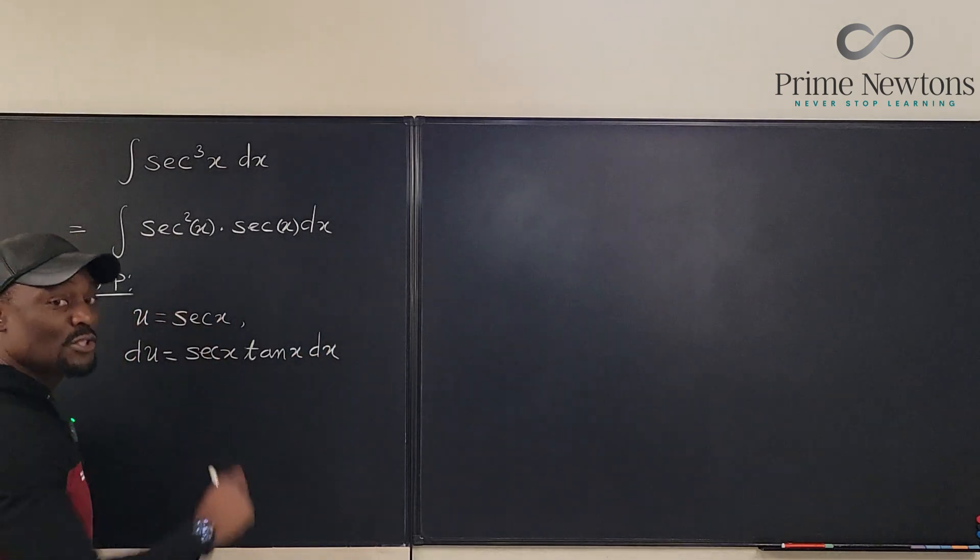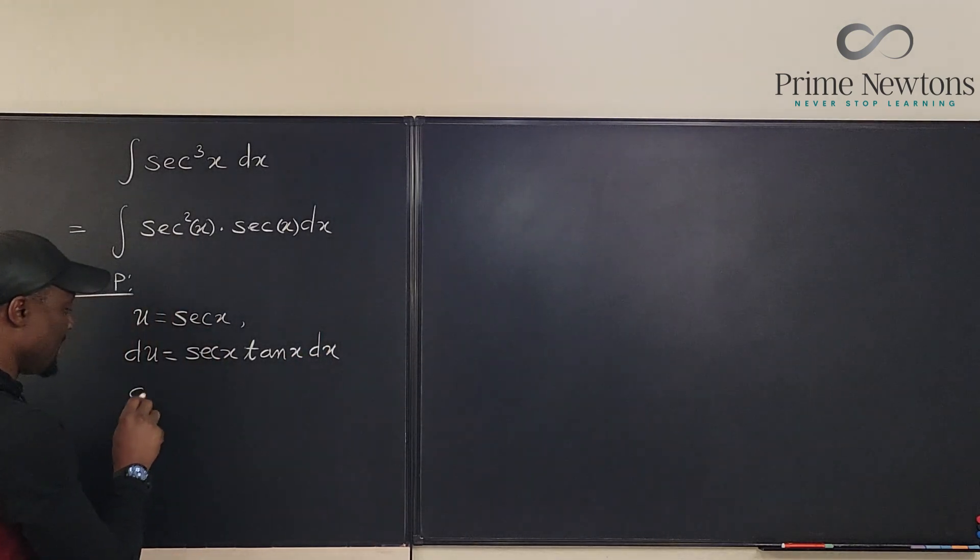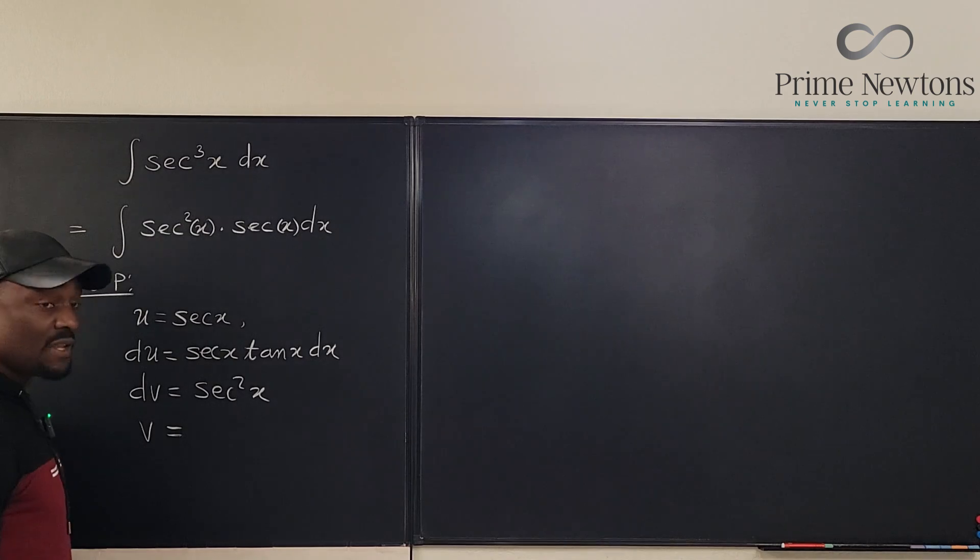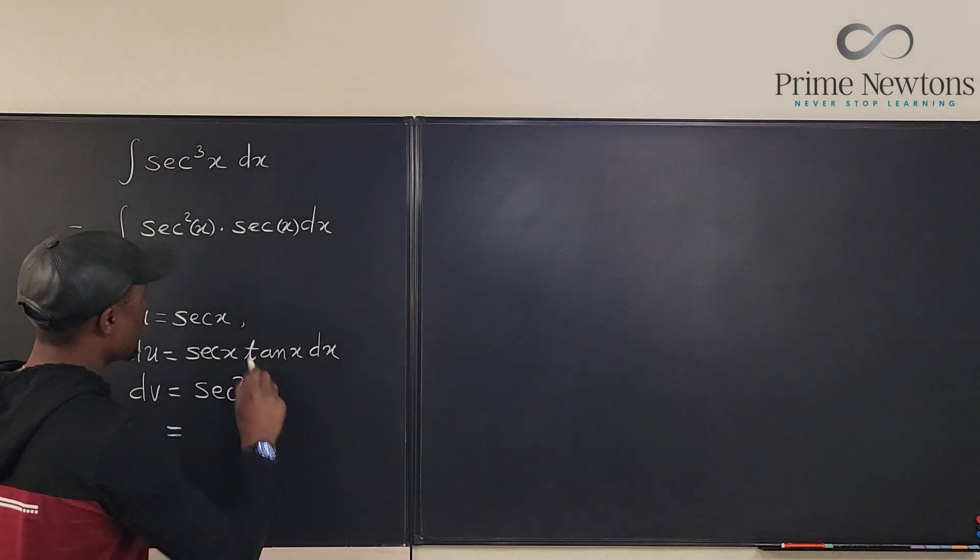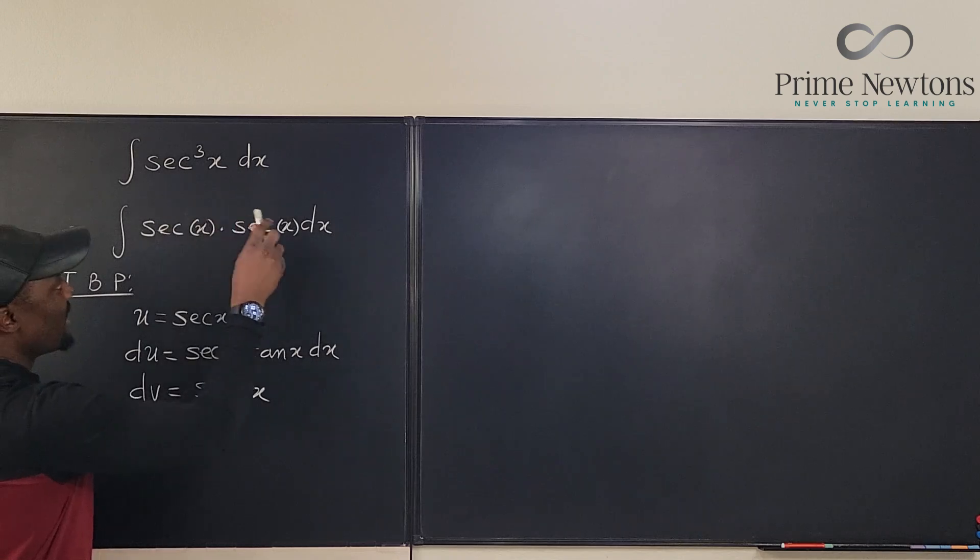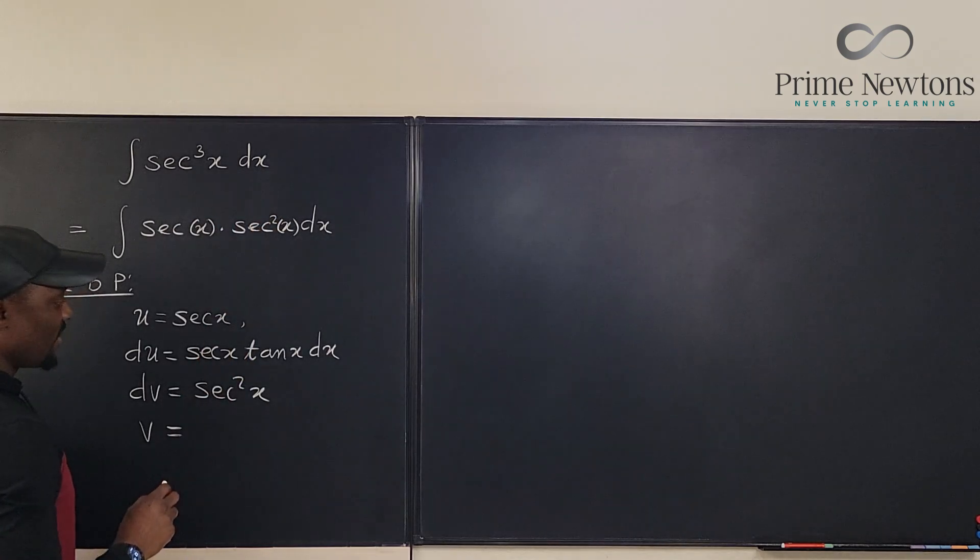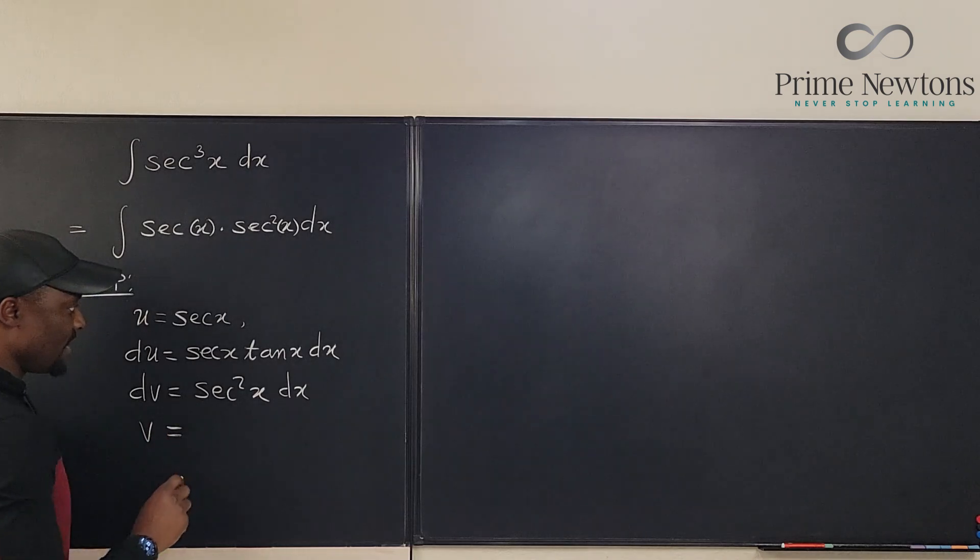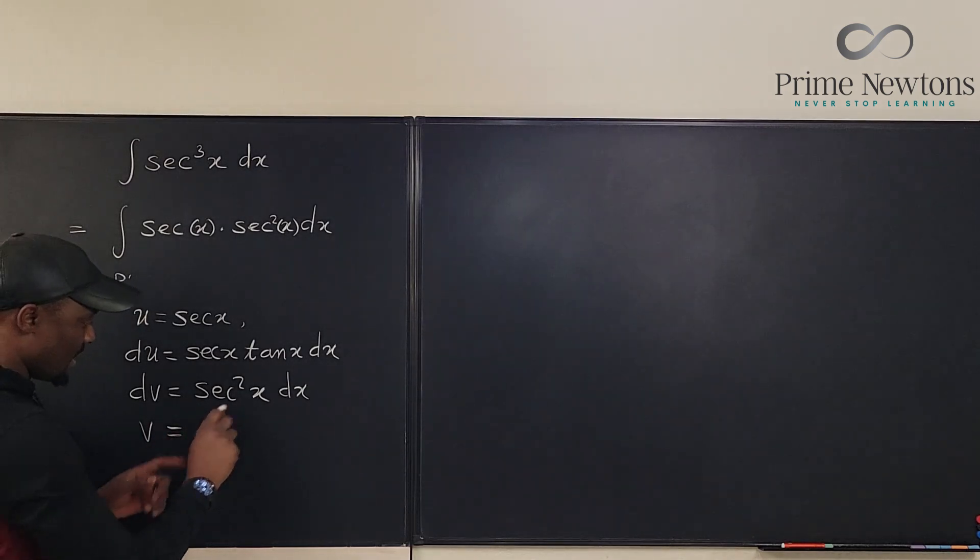And the one you know how to integrate, you're gonna call it dv equals secant squared x. And that means v is going to be, let's just call it secant x d, secant squared x dx. Maybe I should write it this way. Better. So secant squared x dx and so that our v is gonna be what? Tan x.